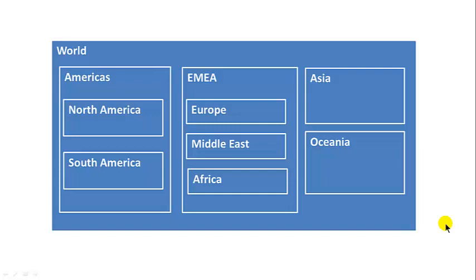Another example: a company that has several sales regions, and they are divided hierarchically. You've got the whole world as one region. Within the whole world region, you've got the Americas, the EMEA region — Europe, Middle East and Africa — and then Asia and Oceania. Those are the top-level regions.